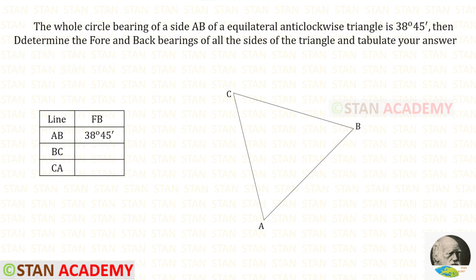According to the question, the traverse is an equilateral anti-clockwise triangle. In the question, only the forebearing of AB is given as 38 degrees 45 minutes. We have to find the fore bearings of BC and CA.